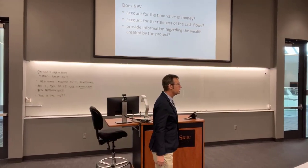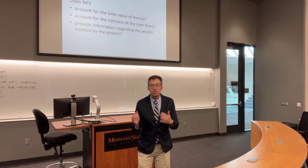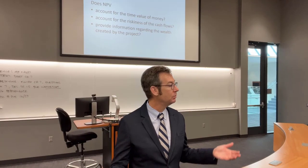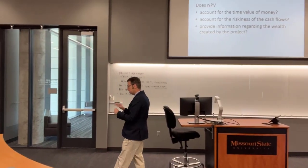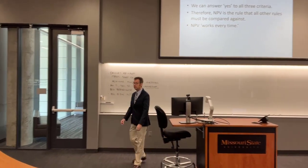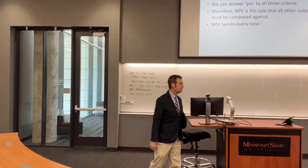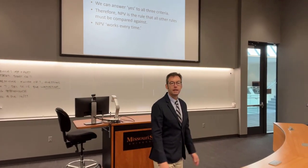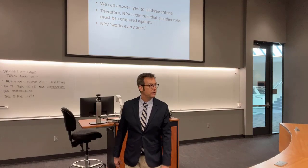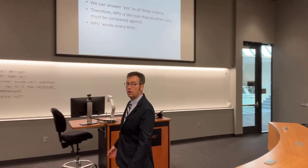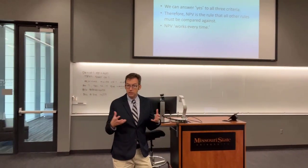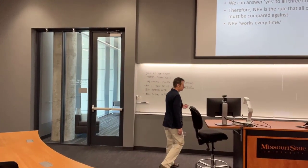And finally: does it provide information regarding the wealth created by the project? Yes — dollars and cents. It gives you an idea of magnitude: is it going to be a million, ten million, fifty million? So how many stars does NPV get? Three. It gets three stars — the maximum. Therefore, NPV is our gold standard; we judge every other rule by it. NPV works every time, but only as good as the information you feed into it: garbage in, garbage out.